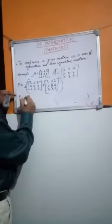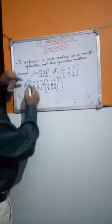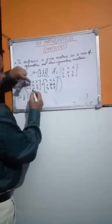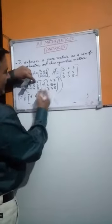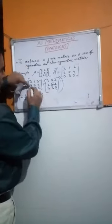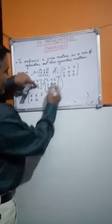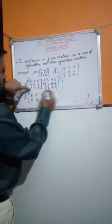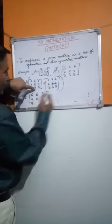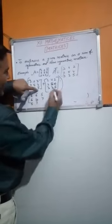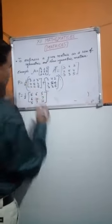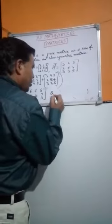Now taking half and summing: three plus three is six, two plus four is six, three plus two is five; four plus two is six, five plus five is ten; three plus four is seven, three plus two is five, four plus three is seven, five plus five is ten. So this is P.